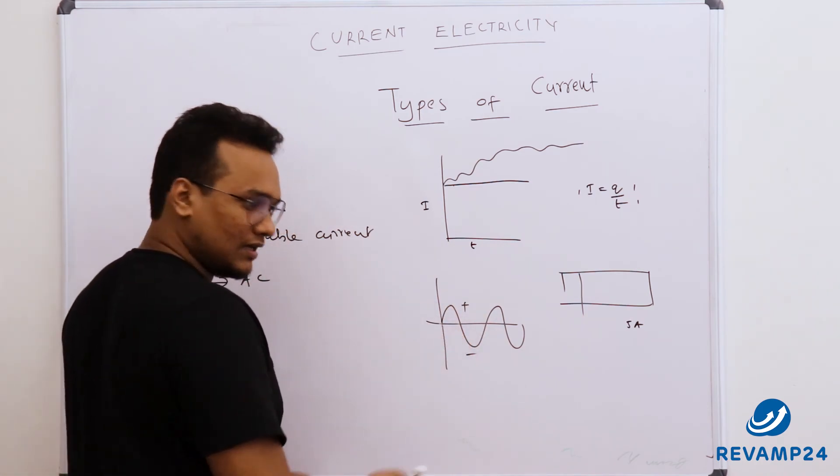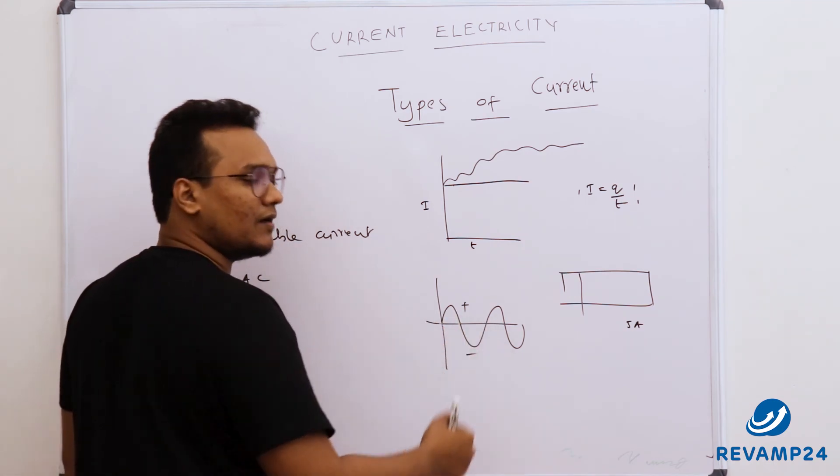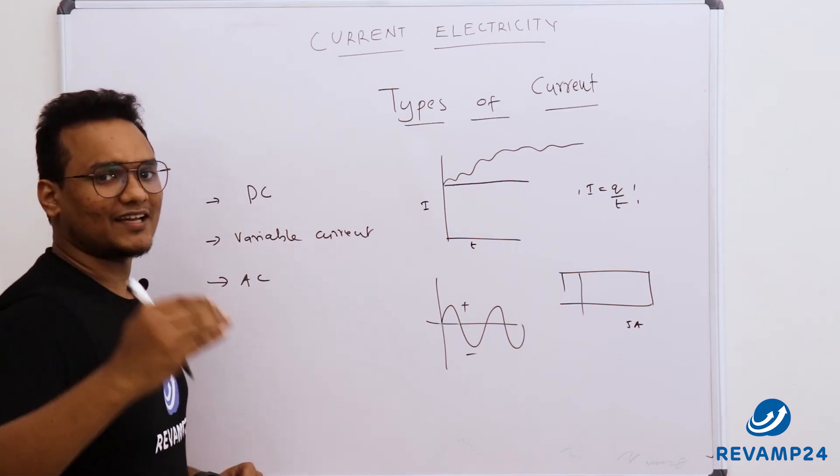So current travels in one direction, starts from zero then maxima then zero. Then in another direction current will start increasing from zero then maxima then zero. So this is AC current. Thank you.